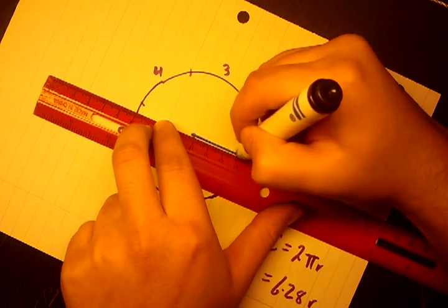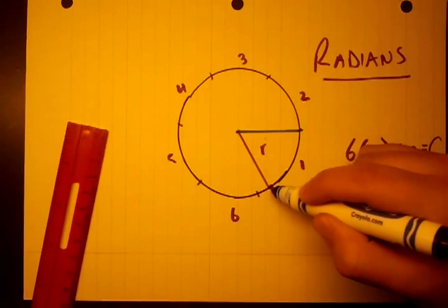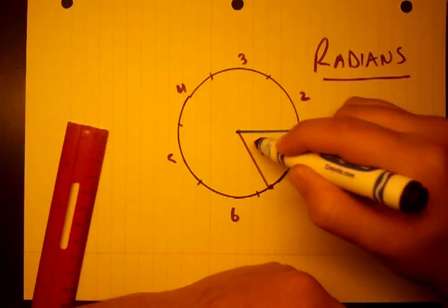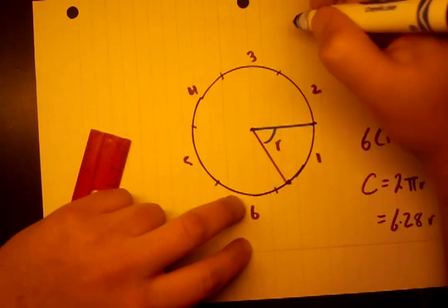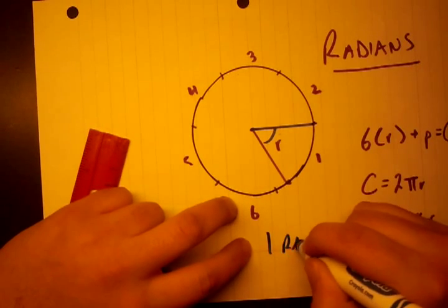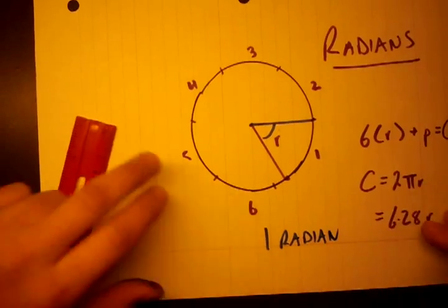One radian is the angle formed when we take a radius of the circle and go to that point. So let's define it like this. If we start at this point and we went around one radius, this angle formed is called one radian.